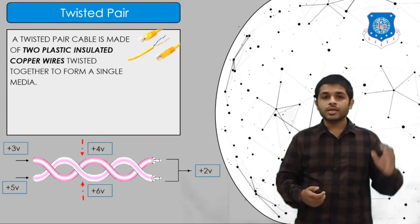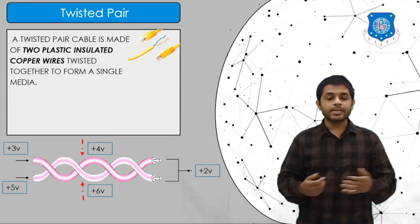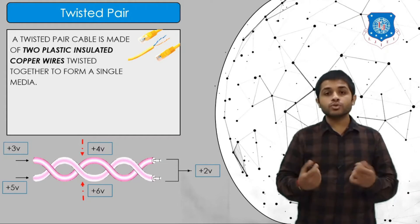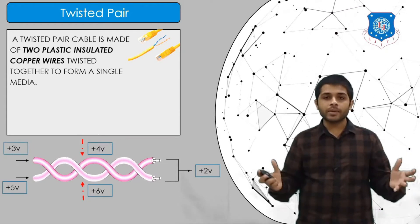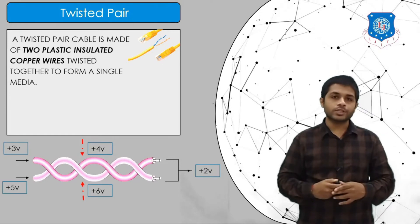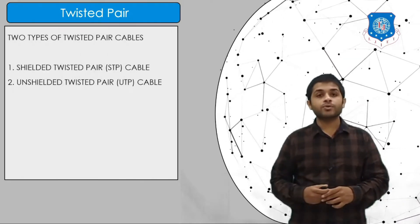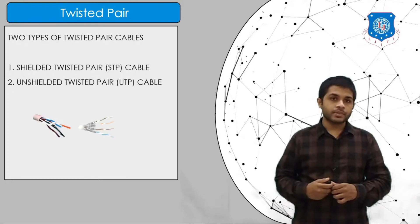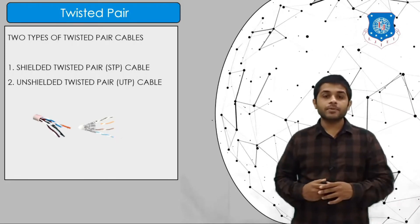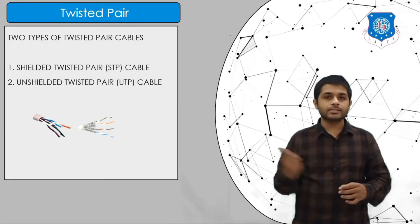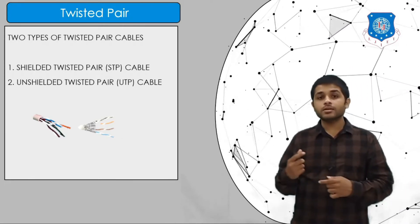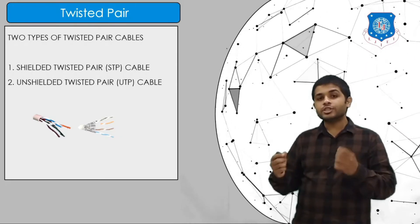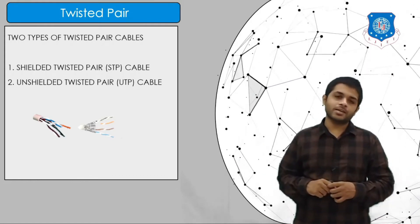Due to this noise-cancellation property, the twisted pair cable is beneficial and more efficient in environments with a large amount of noise. There are two types of twisted pair cables: shielded twisted pair (STP) and unshielded twisted pair (UTP). The shielded cable can tolerate more noise, so signals flowing through it are less affected.